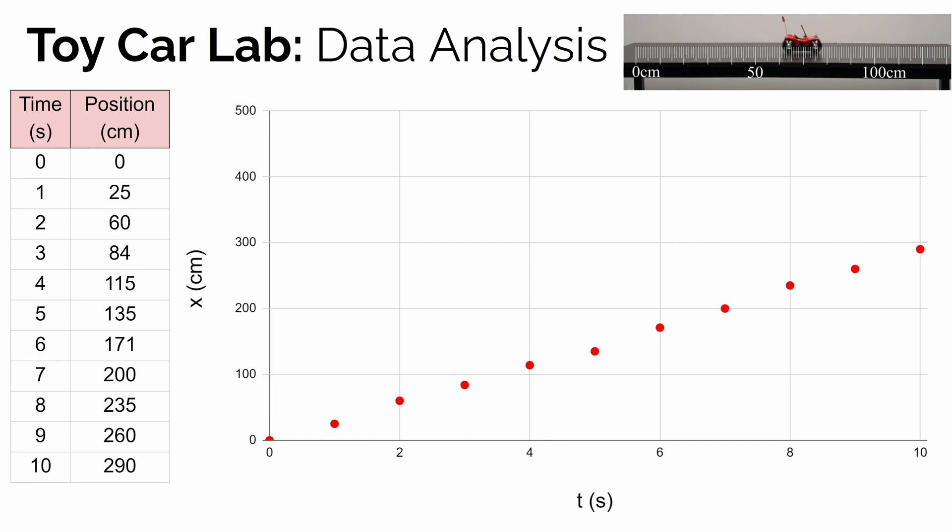To analyze that further, the first thing you're going to do is graph that data. To make that graph, we're going to put the position values on the vertical axis and the time values on the horizontal axis. Remember, the variable or symbol we use to represent position is x, and the variable or symbol we use to represent time is just t. So here we have our position versus time graph.